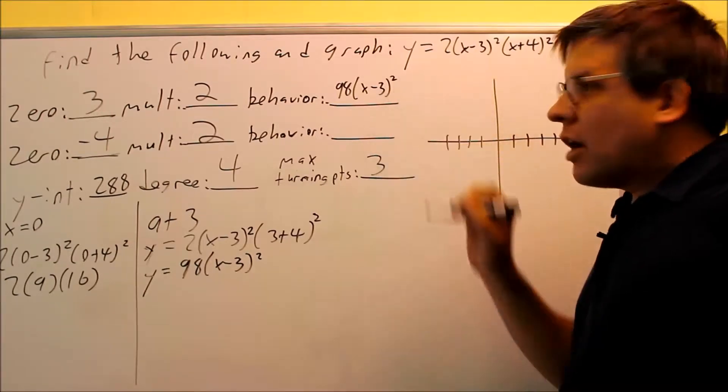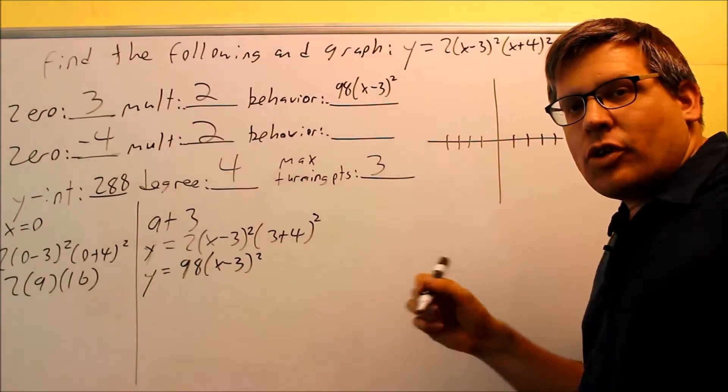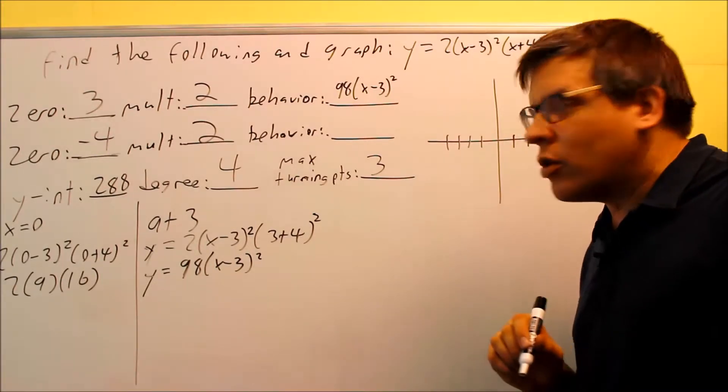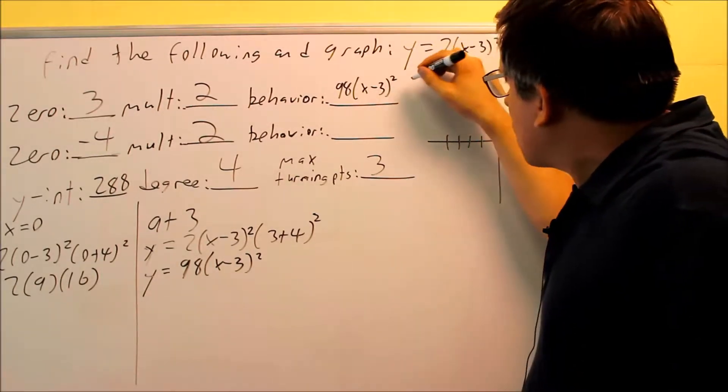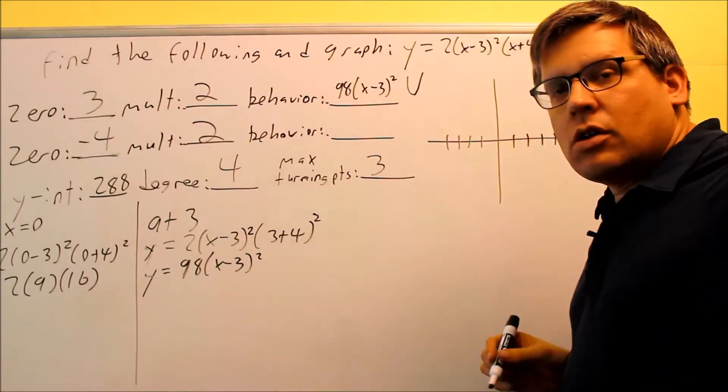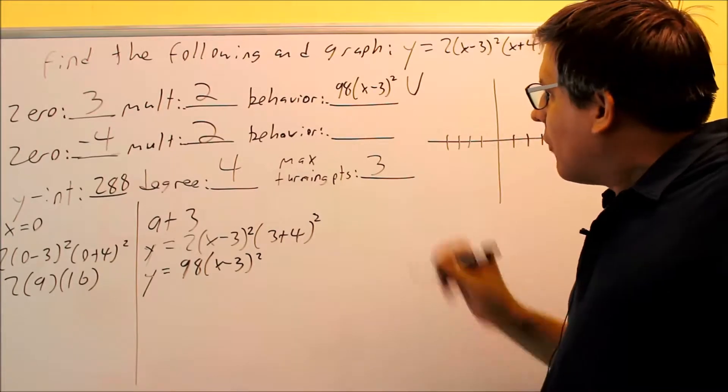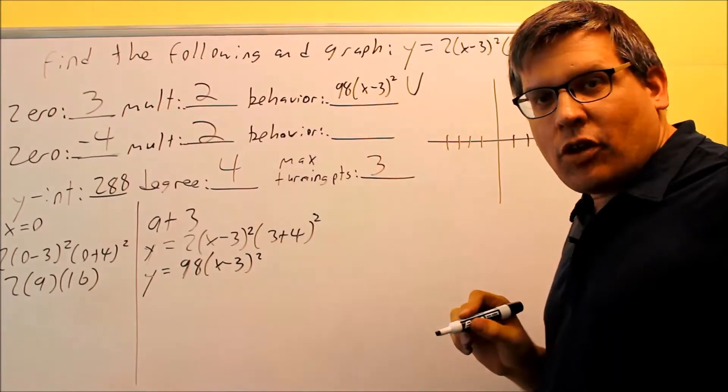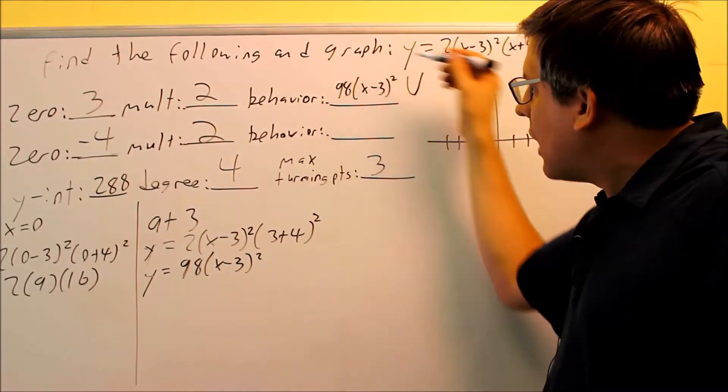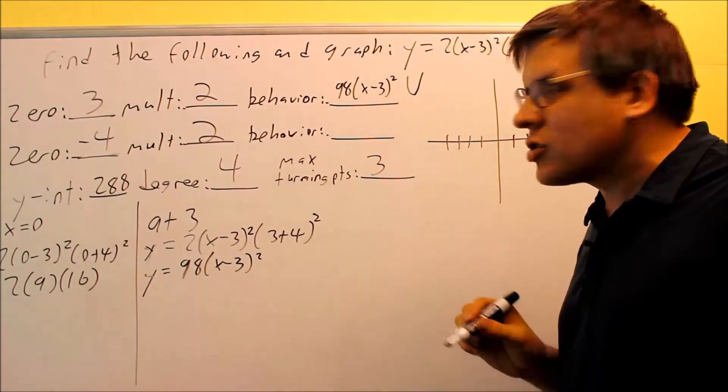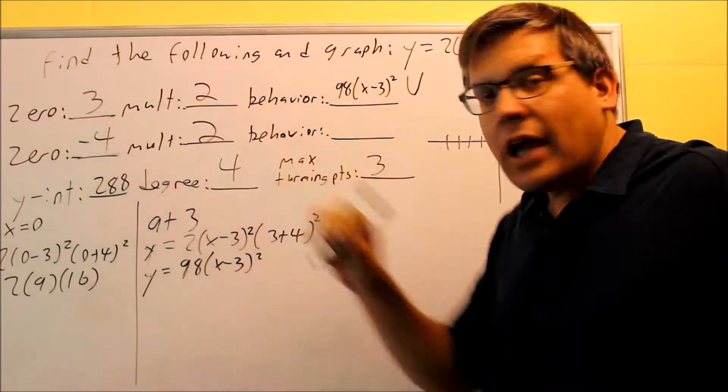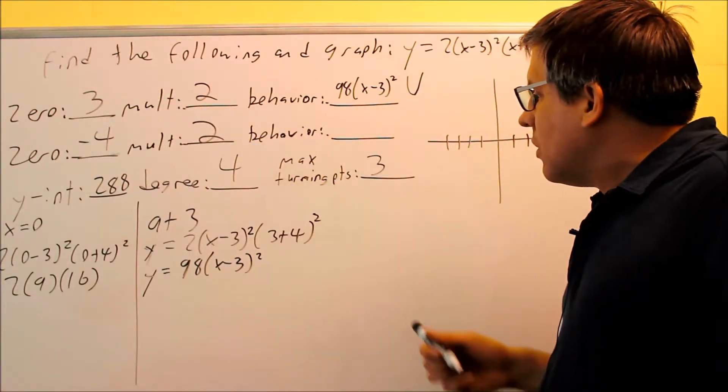So what kind of graph is that going to resemble? Well, the main thing I want to recognize is I have a square on that. And if we go back to the library of functions graph that we talked about before, that means that whenever you see a square, that's going to resemble a parabola. So it's going to look like a u opening up. If there was a negative sign in front of that, that would be a parabola that would be opening down. But in this case, a positive one means it's going to be opening up. So the graph will look like this when it crosses through at 3. It'll look like a u.